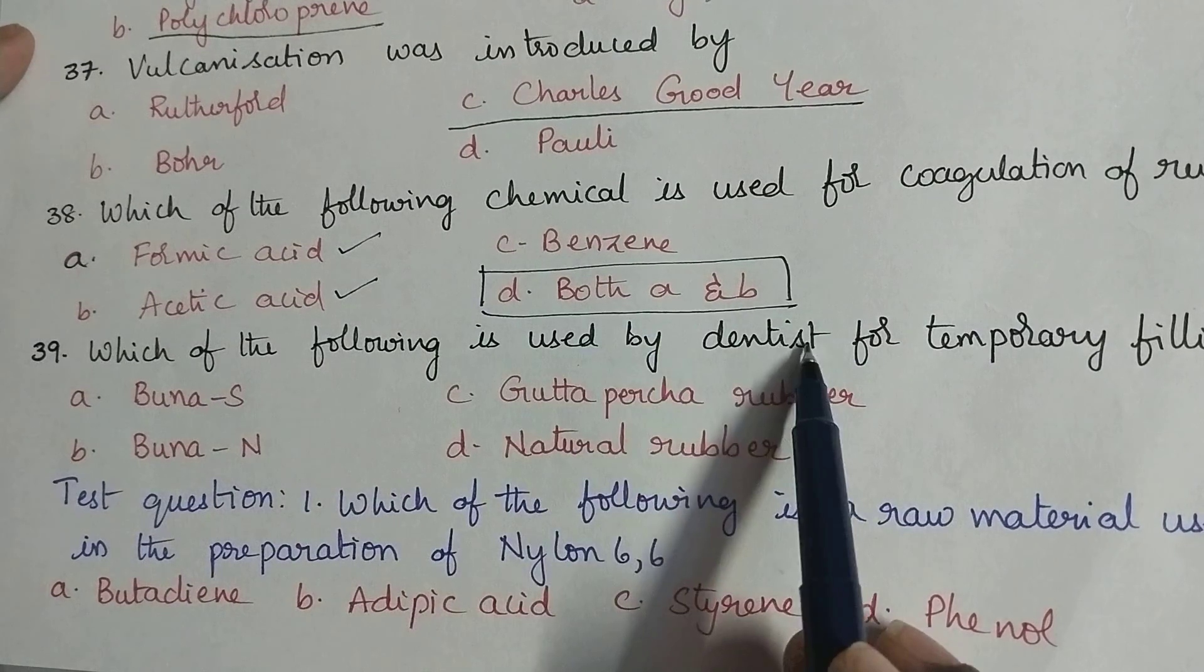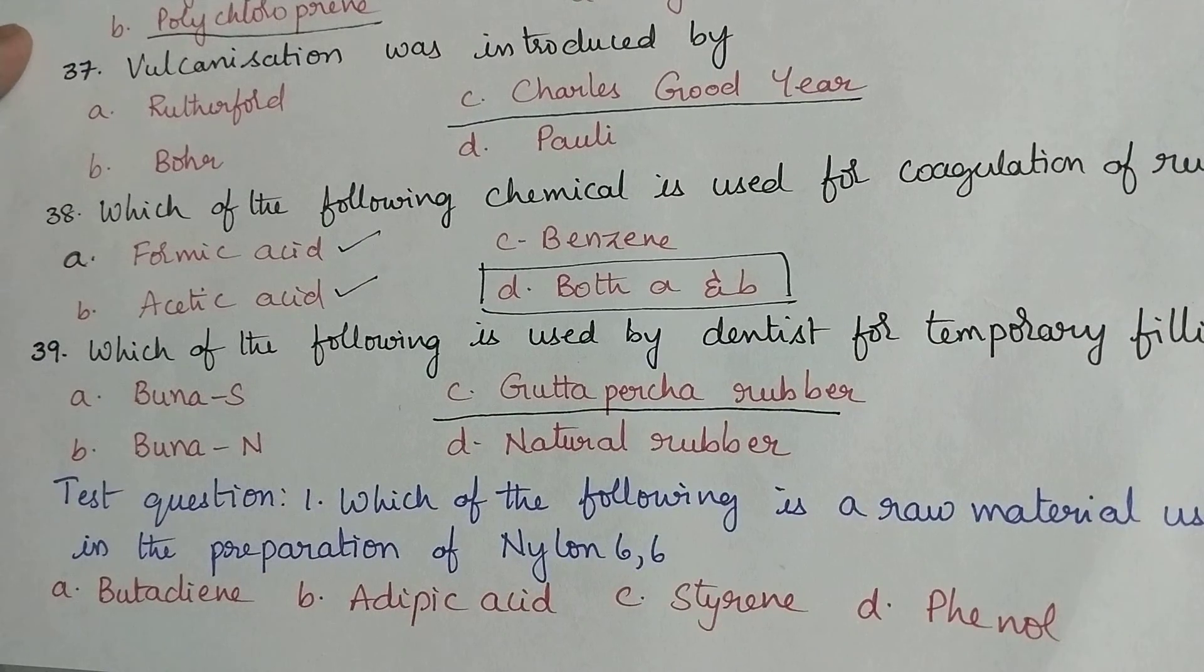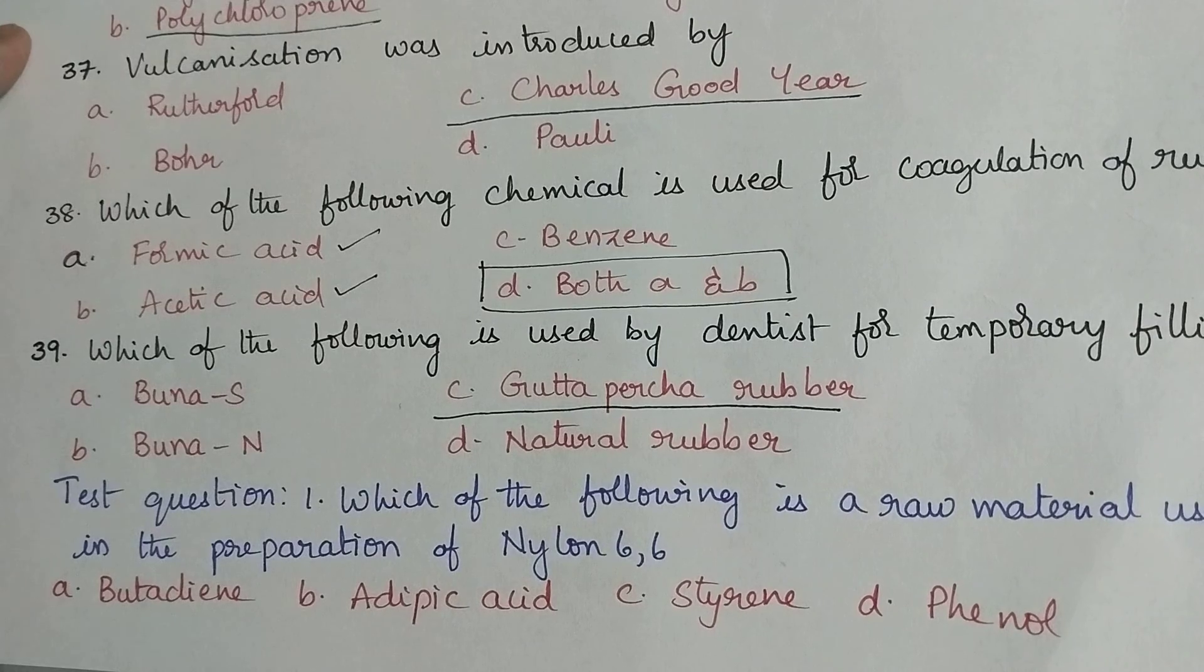During the coagulation of natural rubber both formic acid and acetic acid are used as the coagulants. Which of the following is used by dentist for temporary filling? Gutta percha rubber is used by the dentist for temporary filling.